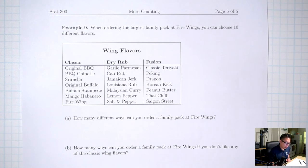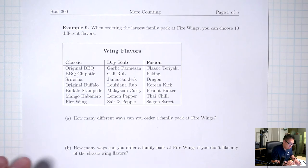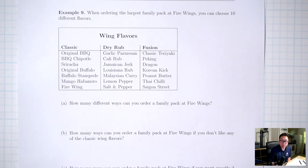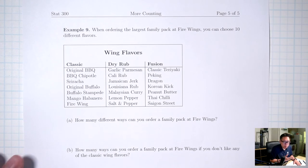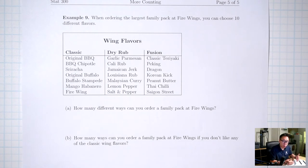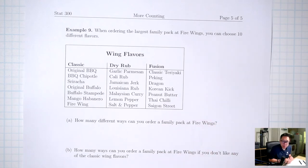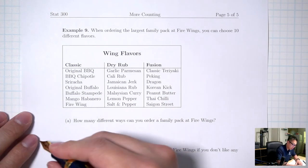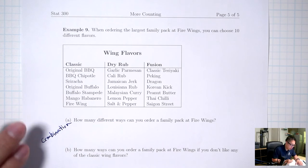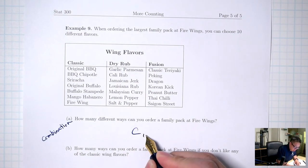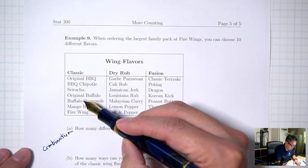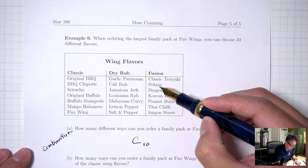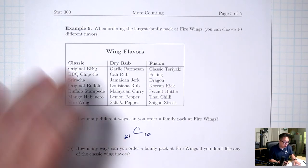Example 9, Part A: When ordering the largest family pack at Fire Wings, you choose 10 different flavors. Does order matter? Probably not — this is a regular combination. Count the available flavors: 21 total. So this is 21 choose 10. NCR(21, 10) = 352,716.